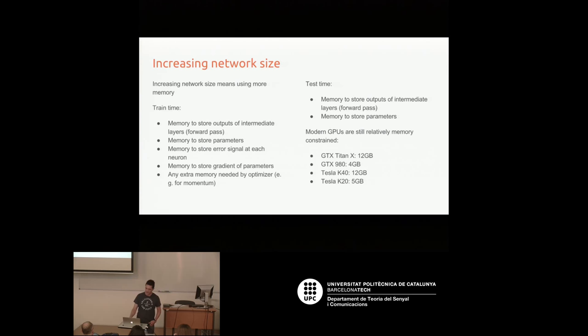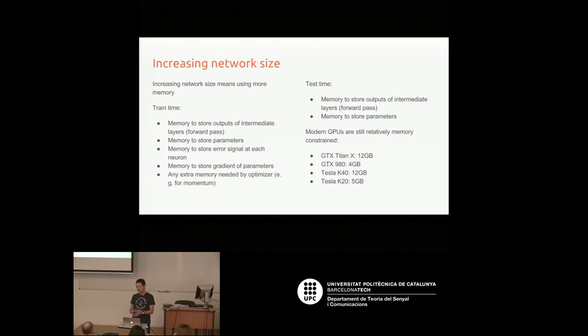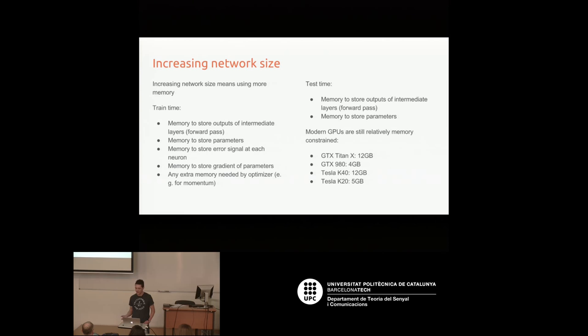You also need extra memory for the optimizer. Different optimizers use memory differently — if you're using momentum, you need extra memory to store the momentum parameters. At test time, you need much less: just memory for the intermediate layer outputs and the parameters. You don't need to store gradients since you're only going forward, so you might be able to use a smaller GPU for inference even if training required a big one.